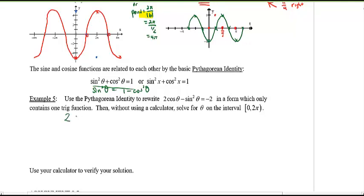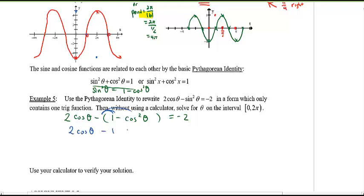In example 5: 2cos(θ) minus sine²(θ) equals negative 2. Replace sine² with (1 − cos²θ): 2cos(θ) minus (1 − cos²θ) equals negative 2. Move negative 2 to the other side, distribute and simplify to get a factorable expression in cosine.